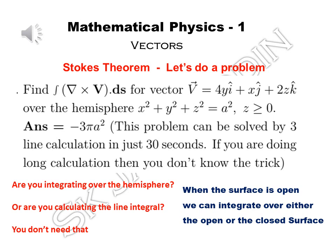Let's see the problem first. You are given to find the integral of curl V · dS — the surface integral of the curl of a vector. The vector is 4y î + x ĵ + 2z k̂. The surface is a hemisphere x² + y² + z² = a², where z ≥ 0.